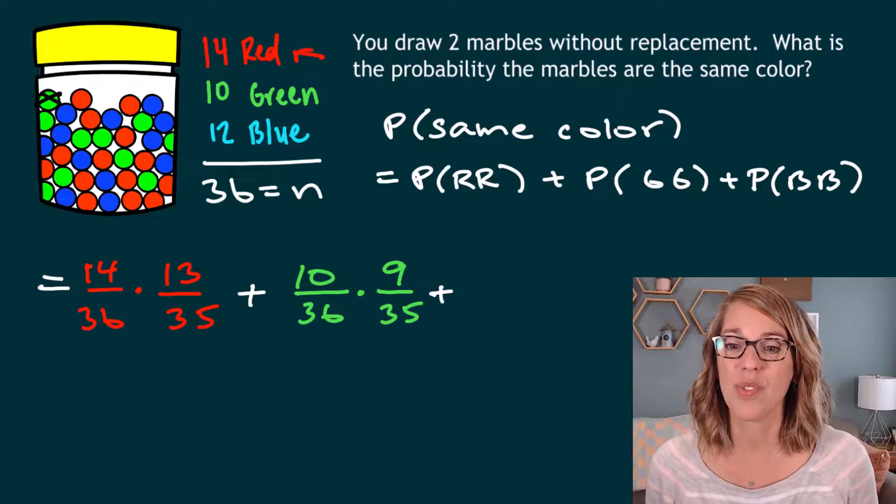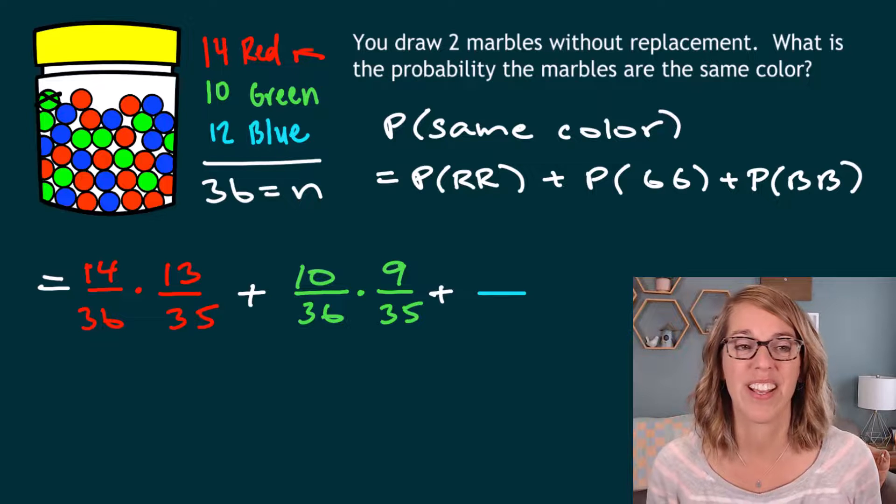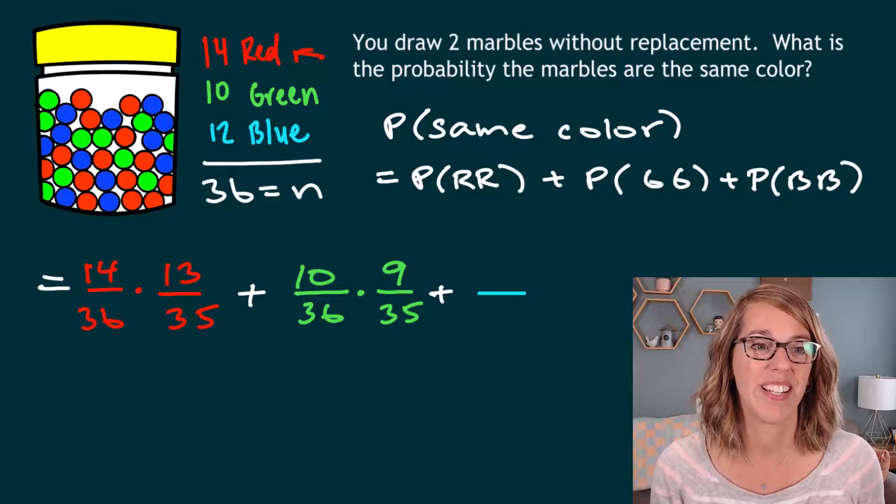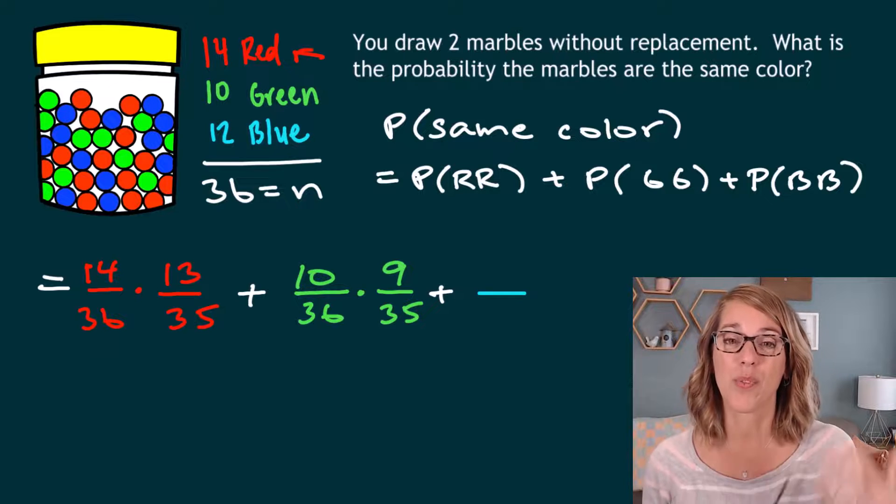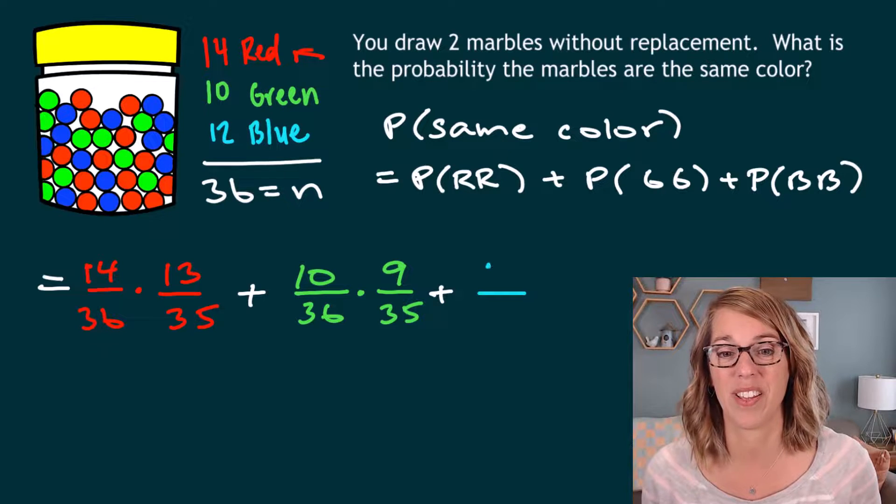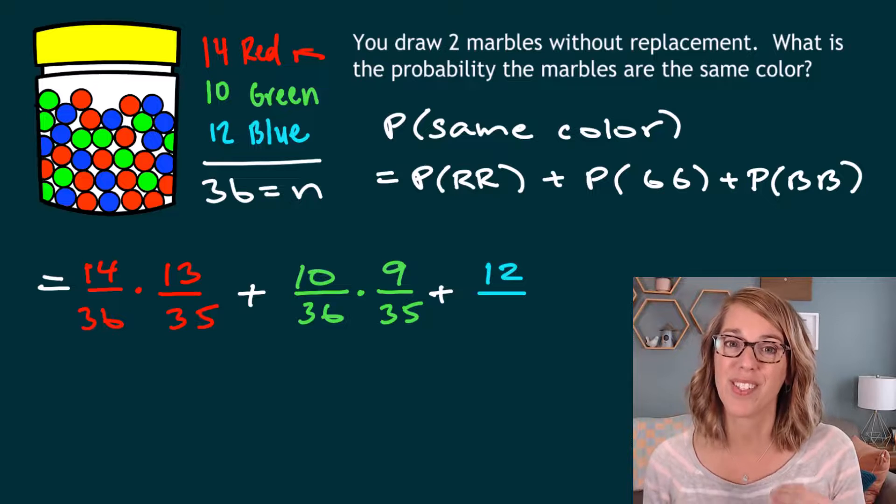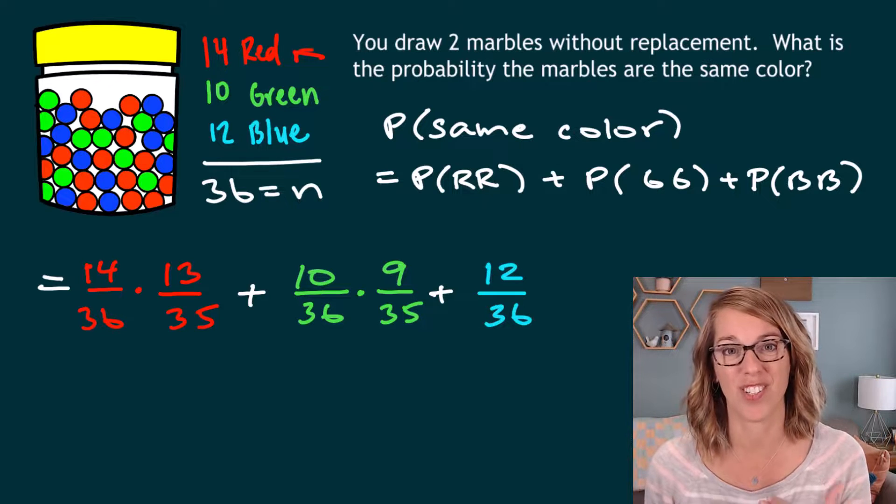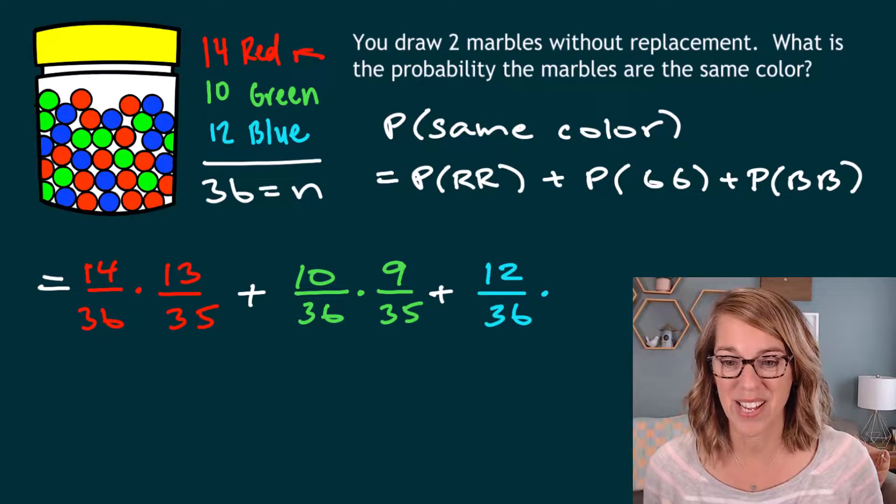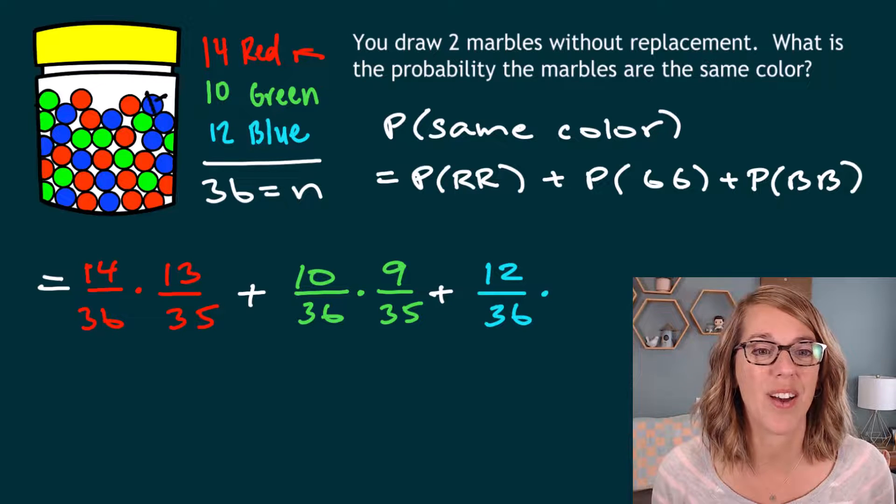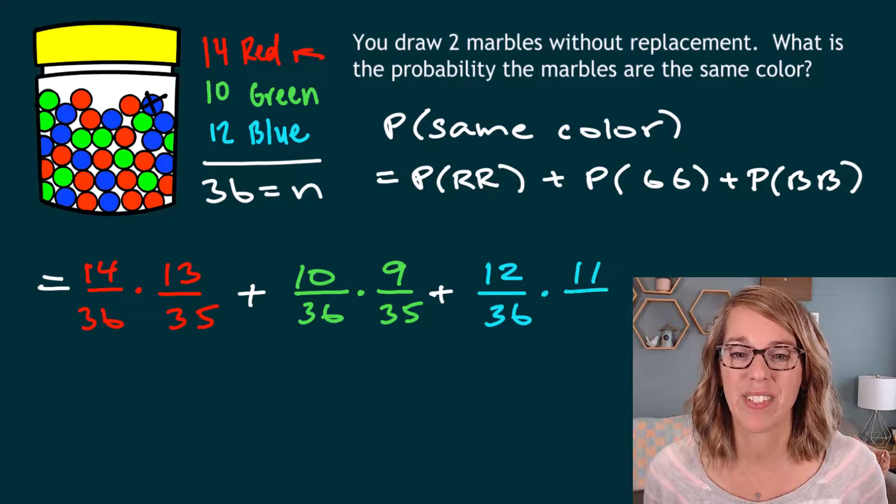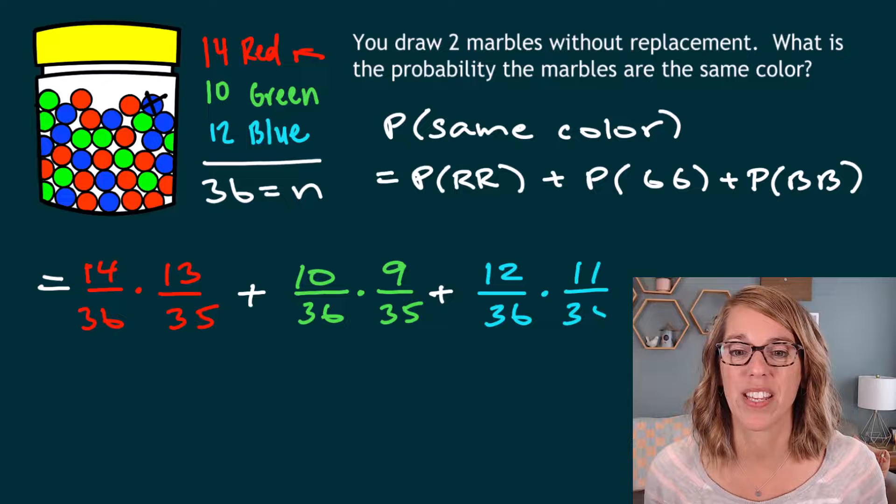Okay, last but not least, we've got those two blue marbles. I again want to go back to a full jar. Now let's go ahead and draw some blue. There are 12 blue marbles to start with. So I can draw any one of the 12 to start and all 36 are in the jar. So any 12 out of the 36 times, but I've drawn one out and set it aside. So that means that I've got 11 left out of the 35.